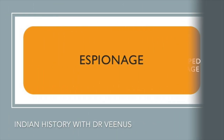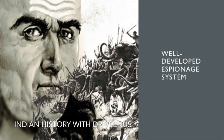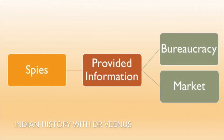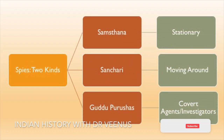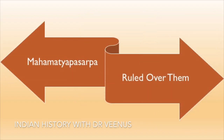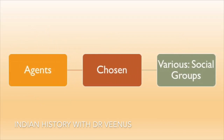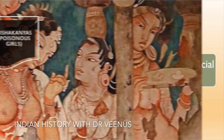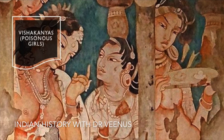The Mauryas had a well-developed espionage system. Spies provided information to the emperor on the bureaucracy and markets. There were two kinds of spies: Samsthan, that is stationary, and Sanchari, who were moving around. Good Purushas were covert agents or investigators, ruled over by the Maha Matyap Sarp. These agents were chosen from various social groups. There were additional agents known as Vishkanyas, the poisonous girls.